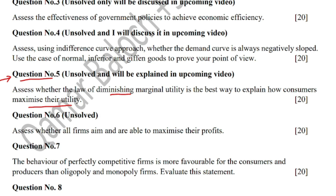Now moving to the answer key. First you have to give Assessment Objective 1 — knowledge — then Assessment Objective 2 — analysis — and then Assessment Objective 3 — evaluation. Assessment Objectives 1 and 2 collectively carry fourteen marks, and Assessment Objective 3 carries six marks, making a total of twenty marks.